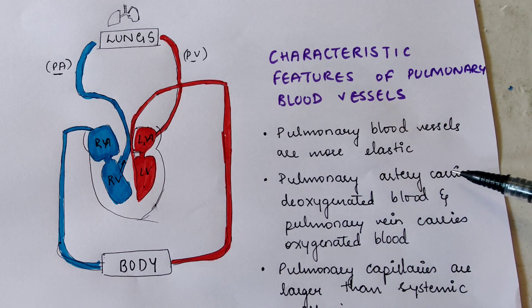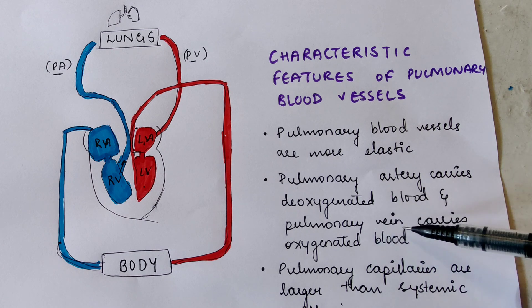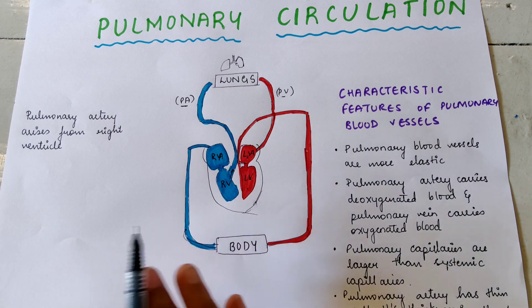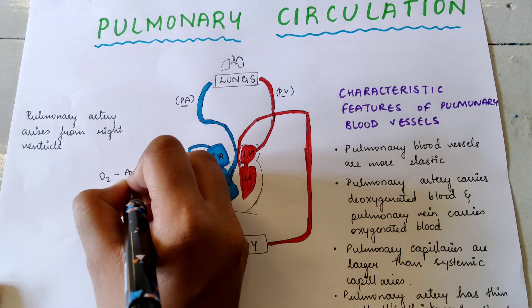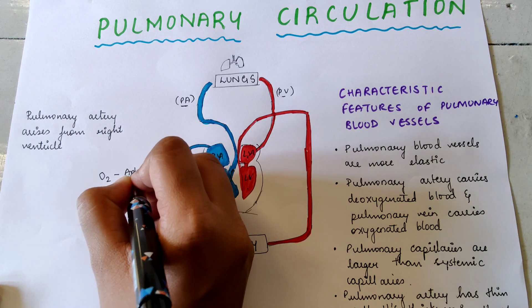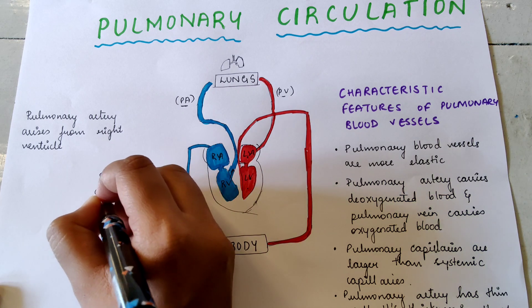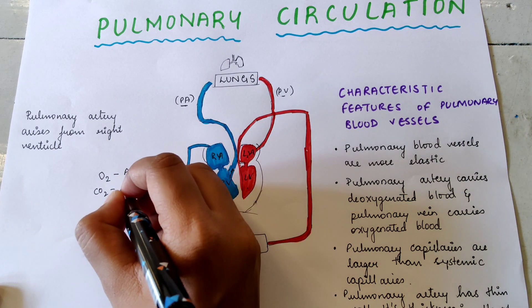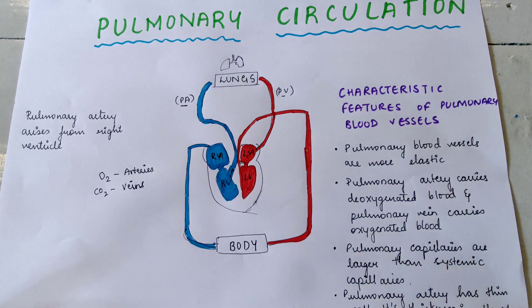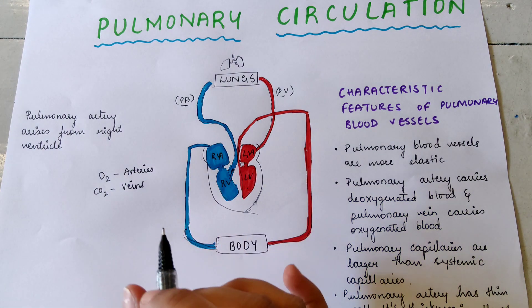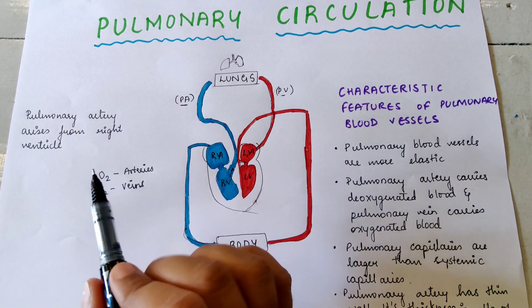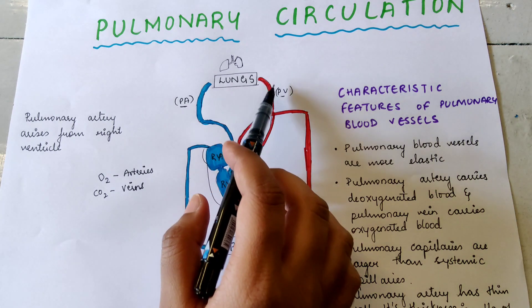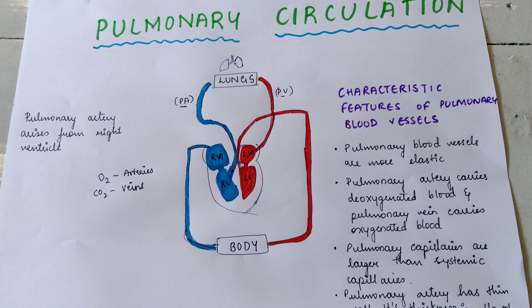The pulmonary artery carries deoxygenated blood and the pulmonary vein carries oxygenated blood. We know that in our body arteries carry oxygenated blood and veins carry deoxygenated blood — but it is the opposite in the lungs. The lungs are the only place where arteries carry deoxygenated blood and veins carry oxygenated blood.